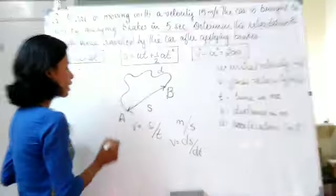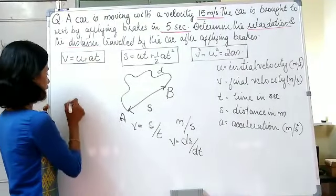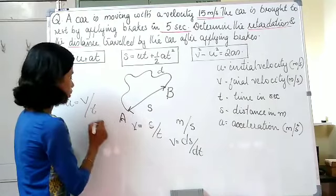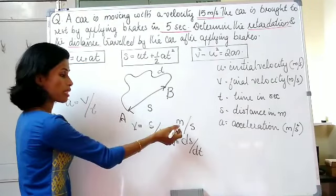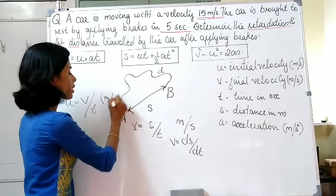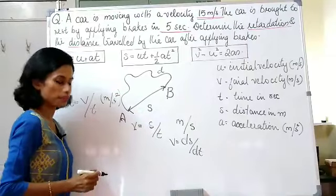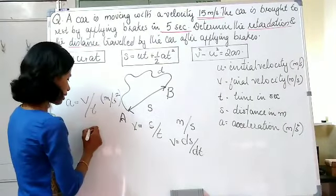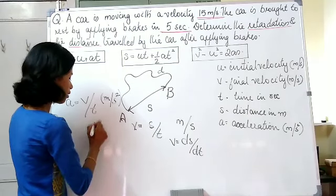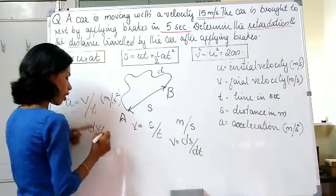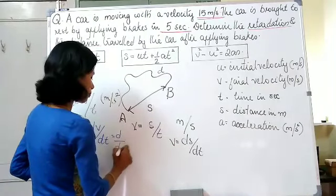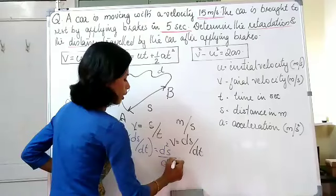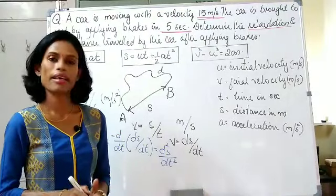Acceleration is the rate of change of velocity. Acceleration A is equal to V divided by T — velocity by time. Velocity has units of meter per second, divided by time in seconds, so the unit of acceleration is meter per second squared. Mathematically, acceleration = dV/dt. Since V = dS/dt, acceleration = d/dt(dS/dt) = d²S/dt².